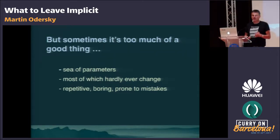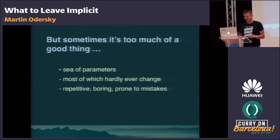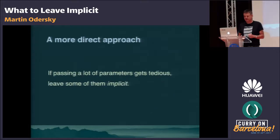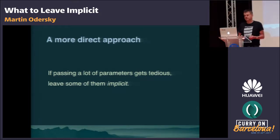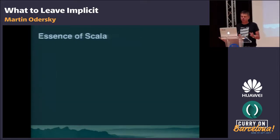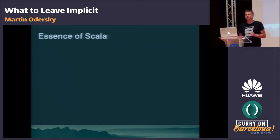There's a more direct approach which can rescue the idea of dependencies as parameters: if passing a lot of parameters gets tedious, leave some of them implicit. That, in a sense, is what I believe is now the essence of Scala — not the way it was designed, but the way it was discovered over the years. If there's one feature that makes Scala Scala, I would pick implicits, and that's what I'm going to talk about in this keynote.